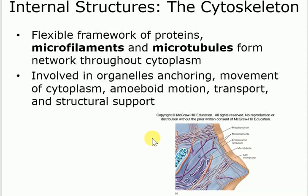The cytoskeleton is an internal framework of proteins — microfilaments and microtubules. Just like our skeleton is bones, cells have a skeleton inside. In our cells, it keeps the shape and stabilizes the cell, and is involved in transport. In other types of eukaryotes, like protozoa, there is an additional function: movement. They can help the cell move — this is called amoeboid movement or pseudopodia, where the cytoskeleton pushes and pulls from different sides to change the shape and move.